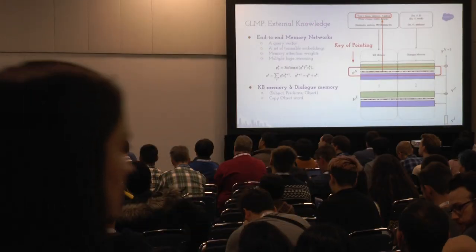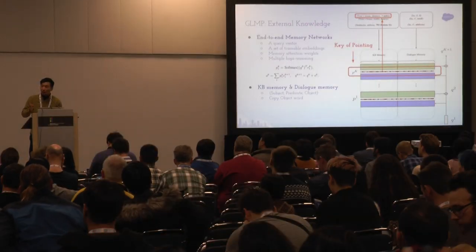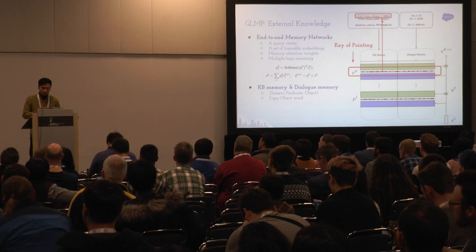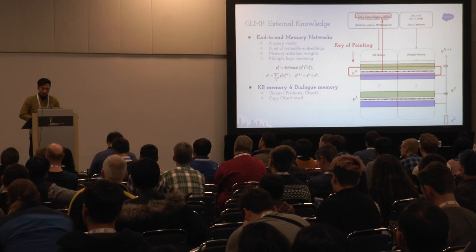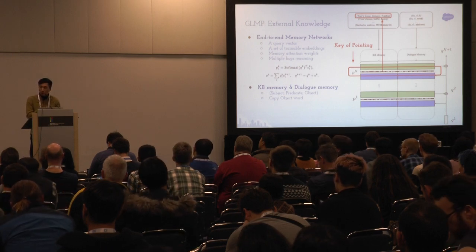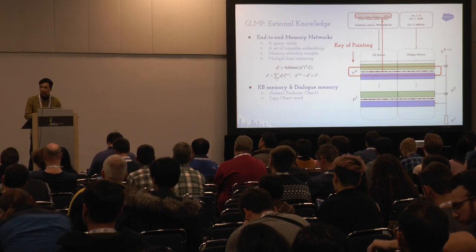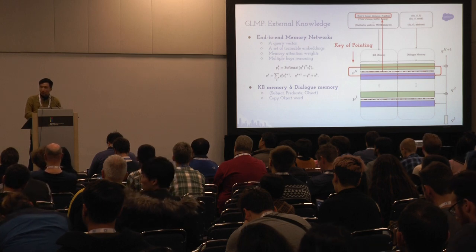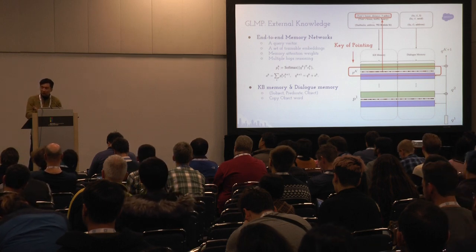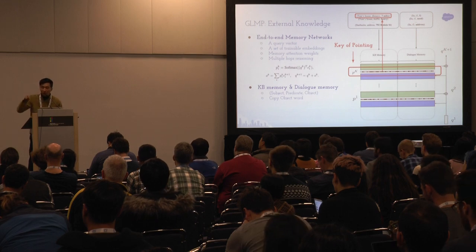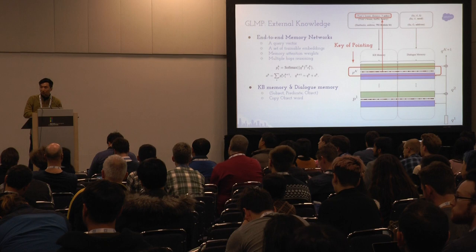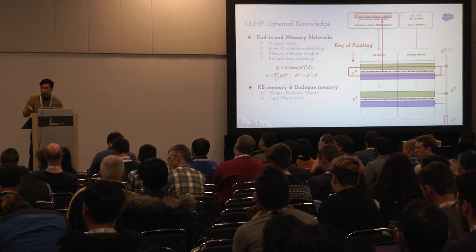For the second part of the question about entity types in the KB: each KB node is represented as subject, predicate, object — for example, 'townhouse distance three miles.' Each word has its own embedding and I sum them to represent the node. So if you copy the 'three miles' node, you already know it is the distance for townhouse, because that information is encoded in the triple representation.